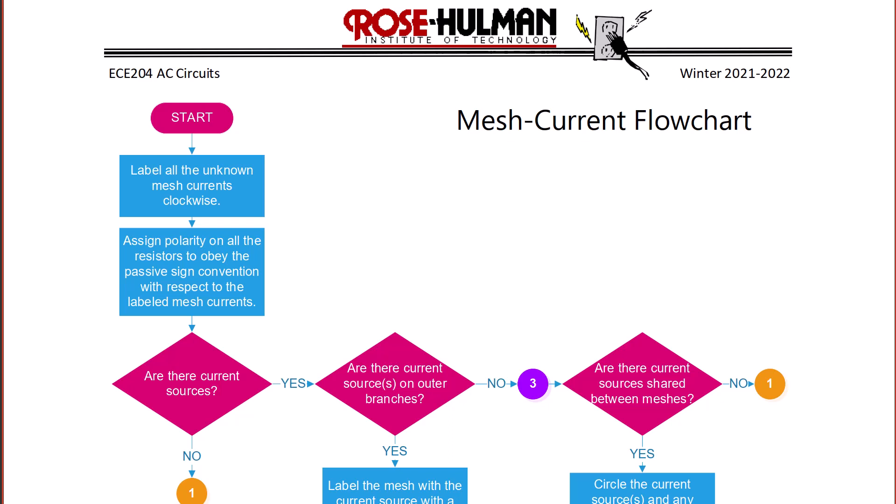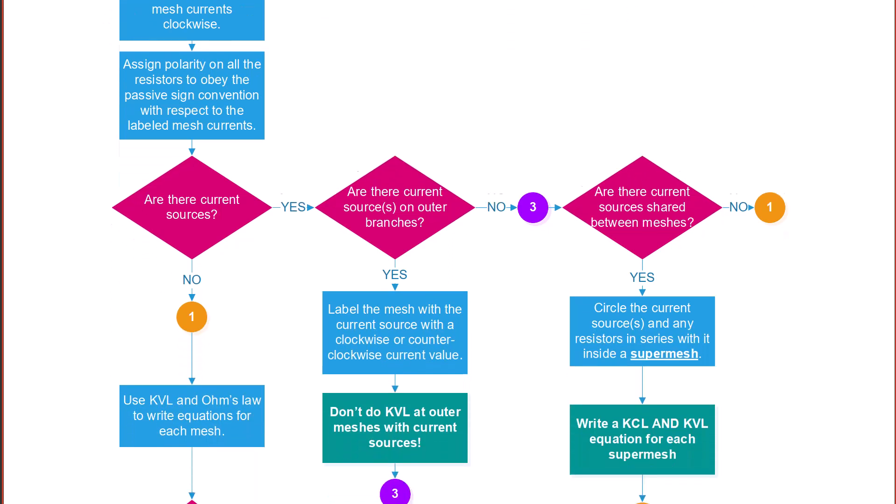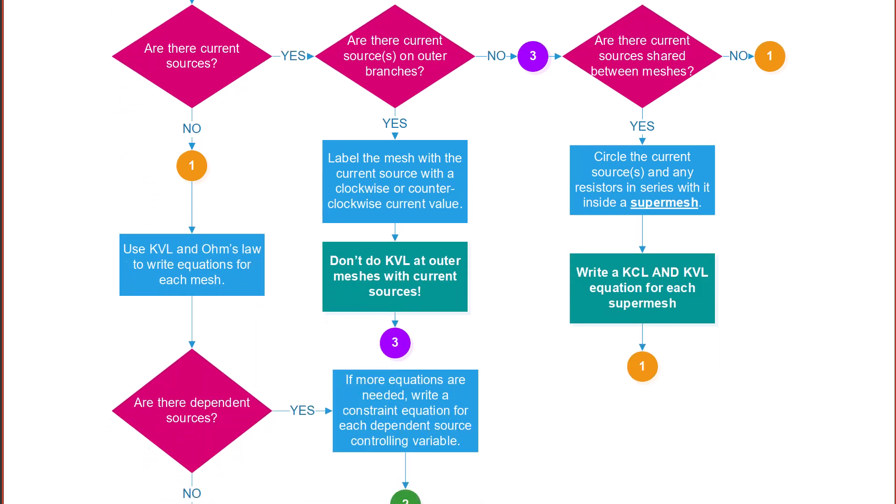Are there current sources? If no, then you just use KVL similar to Ohm's law to write the equations for each mesh. If there are current sources in outer branches, then you label those meshes with the value of the current source either clockwise or counterclockwise and you don't do KVL. If there are current sources shared between meshes, that means you have a super mesh and you'll have to write both a KCL and a KVL equation for the super mesh.